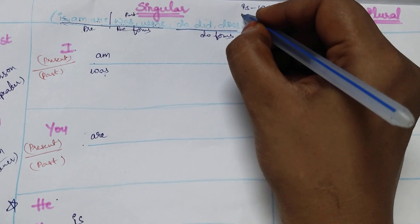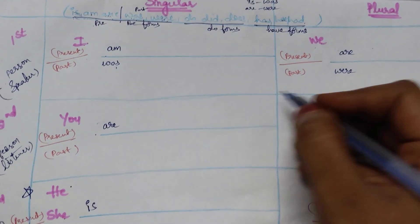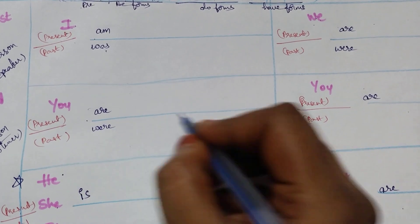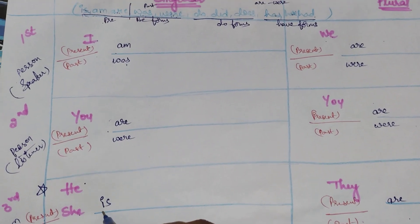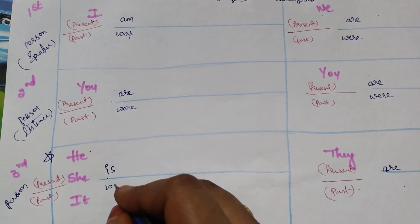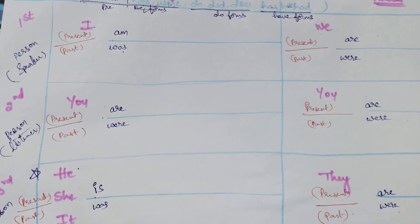Are changes to were. So wherever you get are, were. Wherever you get are, were. Now is, was, were - completed. Be forms completed.